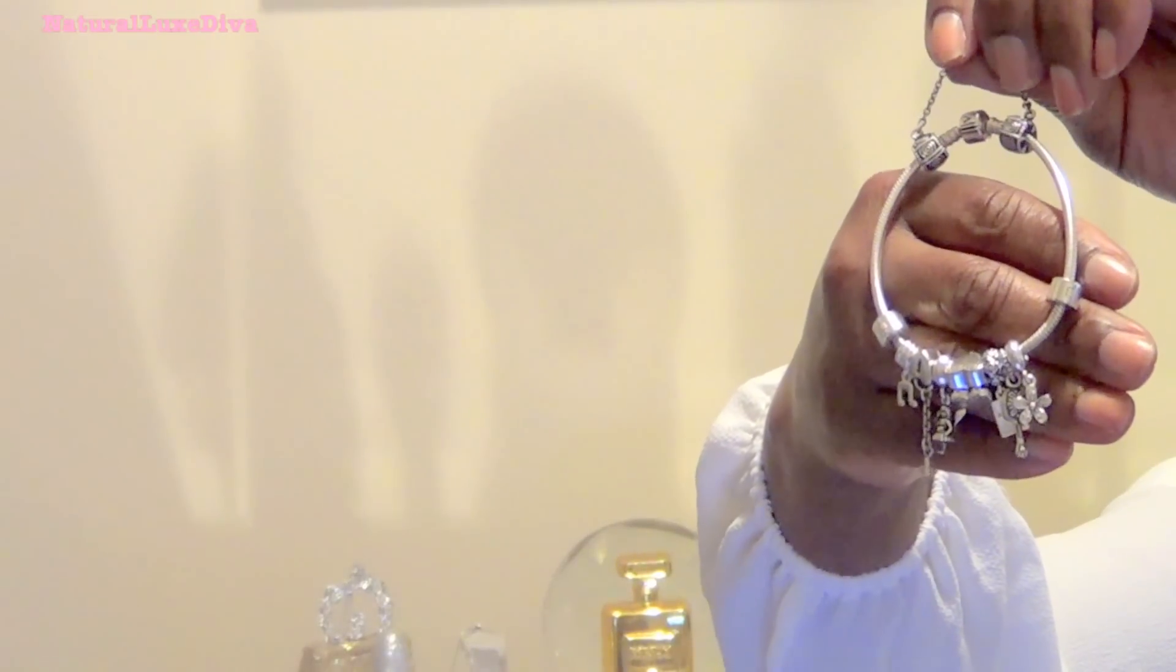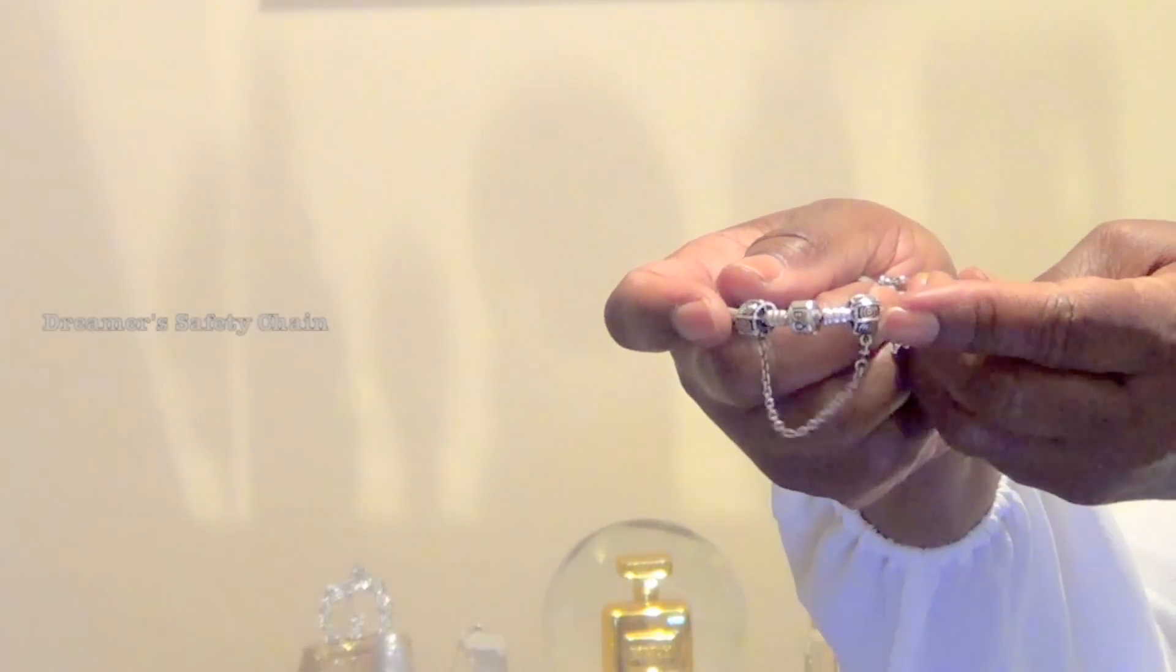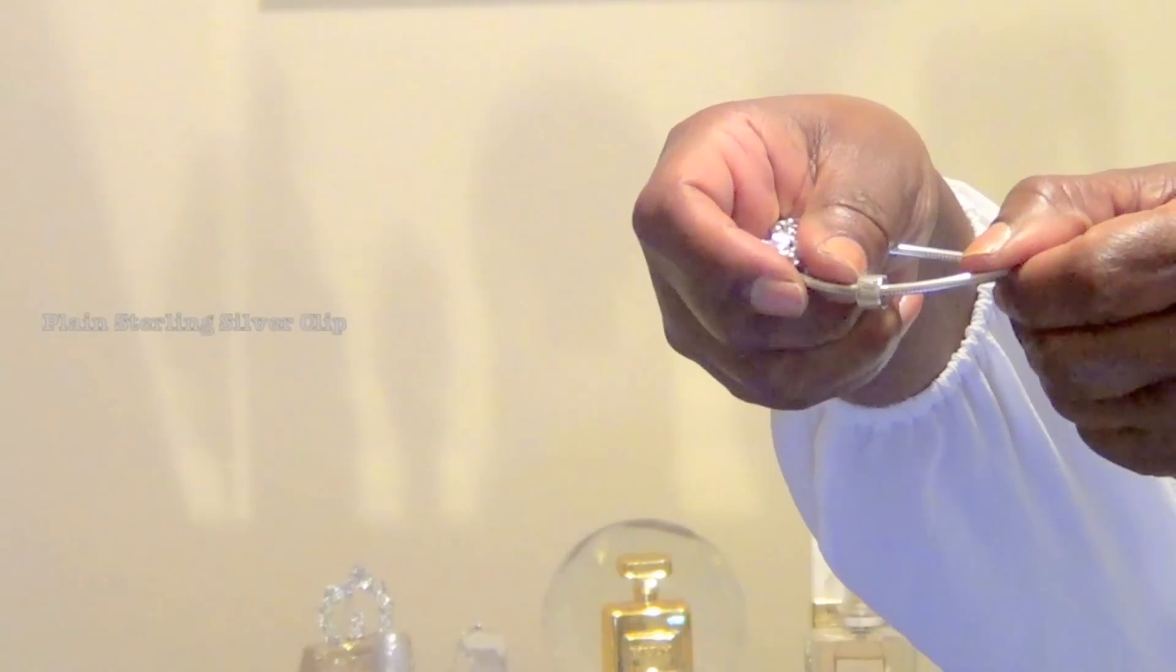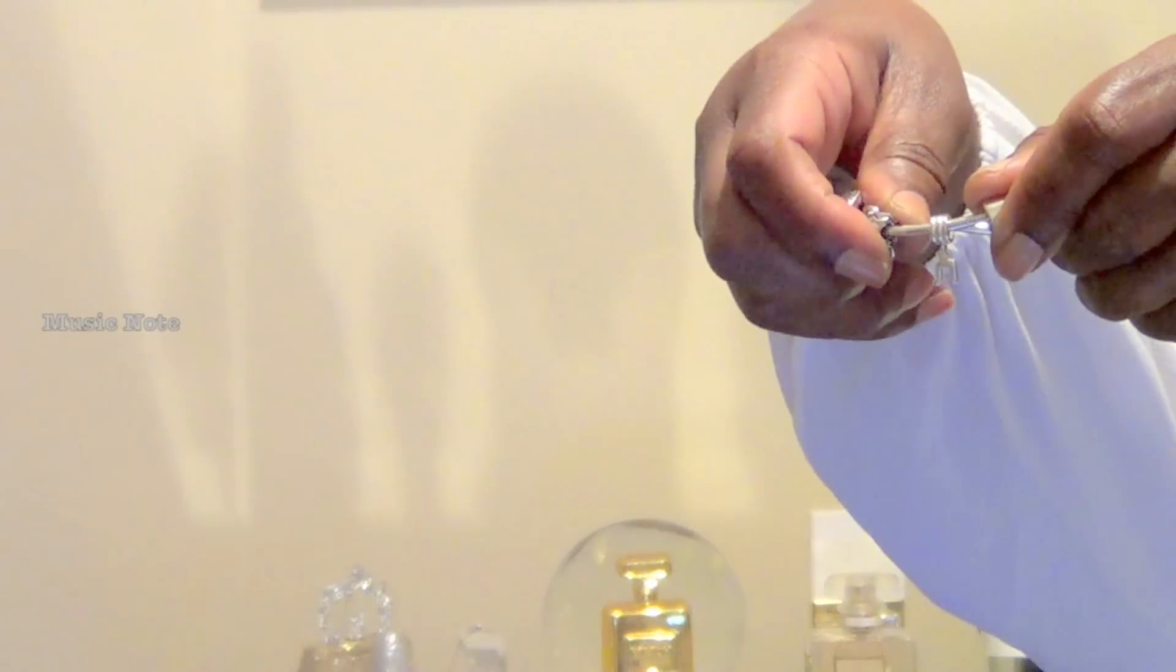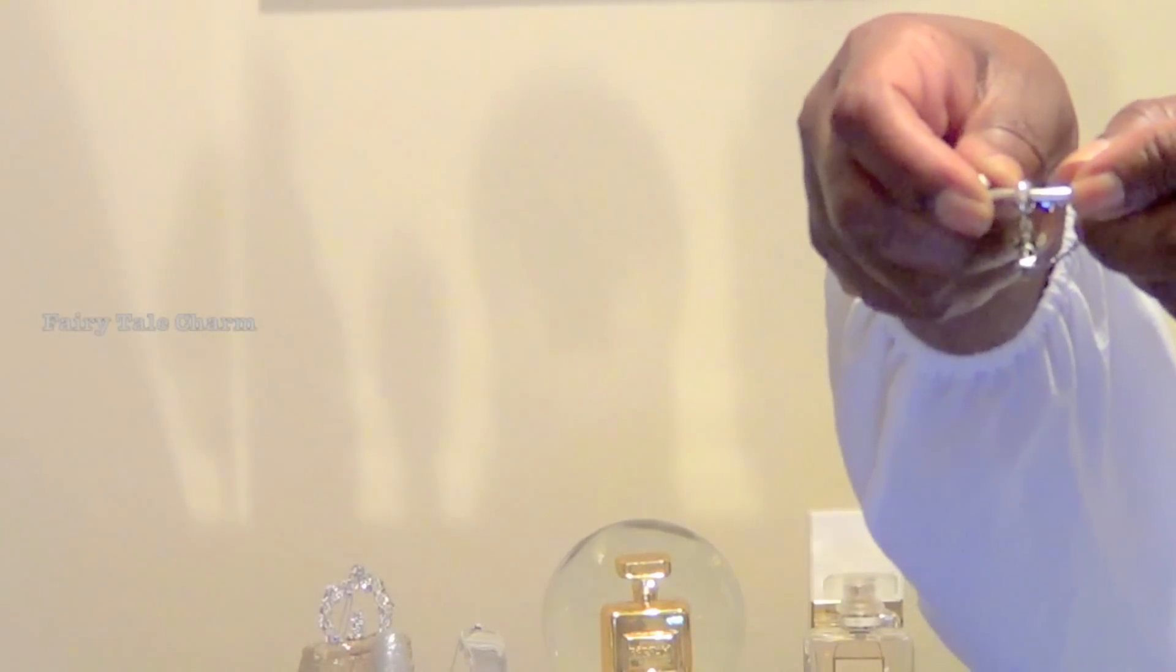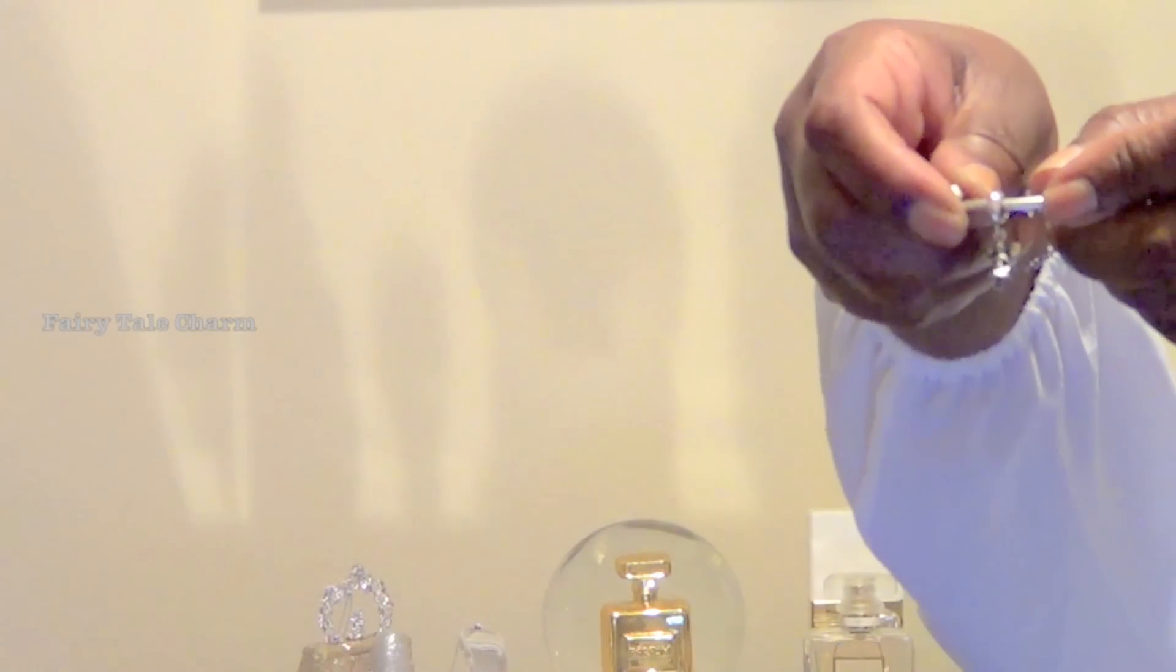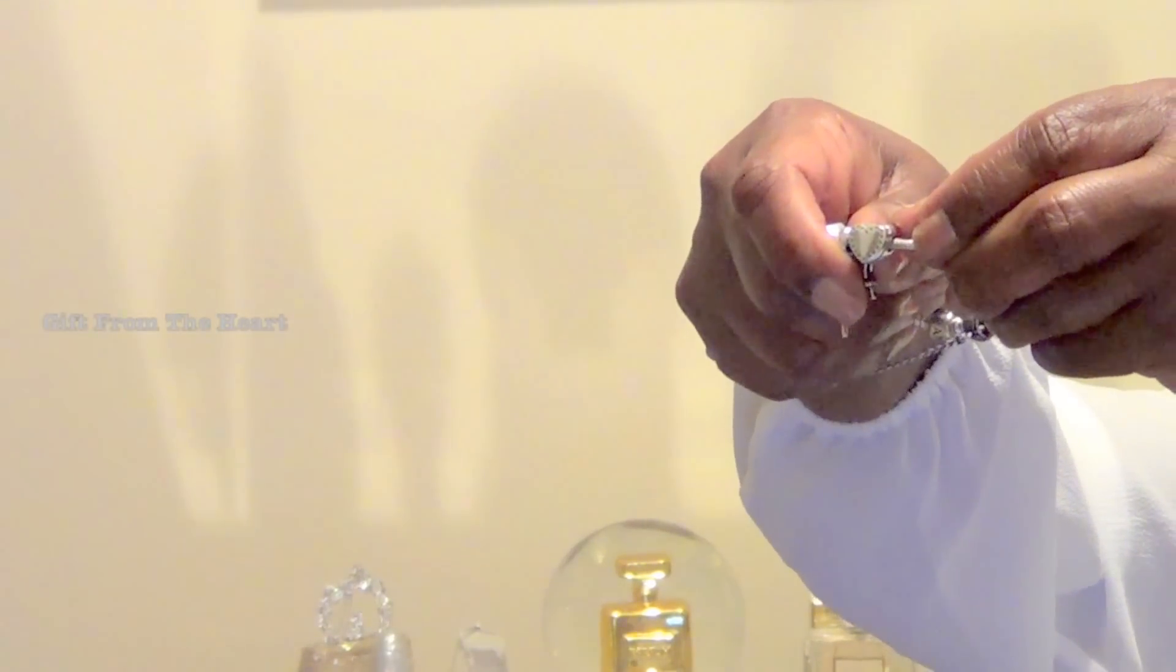This is the iconic silver charm bracelet. On this bracelet I do have the safety chain. This is called the dreamer safety chain. This is the silver plane clip. This is the music note charm. And I do come from a musical background. This is the heart lock and key charm. This is the fairy tale charm. It is sterling silver with a 14 carat gold heart on the stomach. This is called gift from the heart.